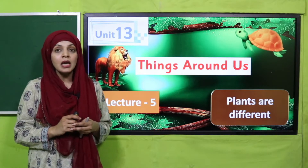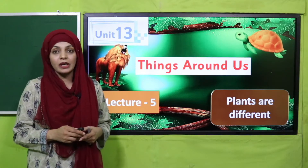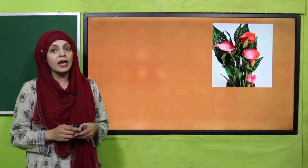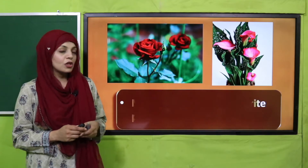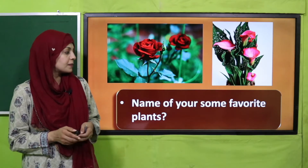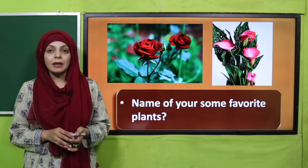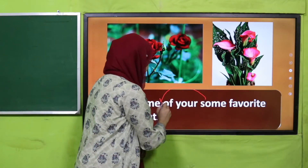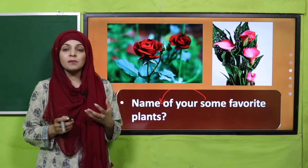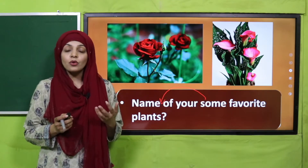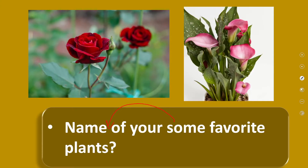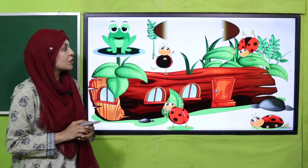In the previous lecture we identified different plants, and today we will learn how they are different from each other. Let's quickly recap what we did in the previous lecture. Look at these pictures and answer: name some of your favorite plants. For example, I like rose, jasmine, apple tree, and mango tree. Quickly pause the video and name your favorite plant.